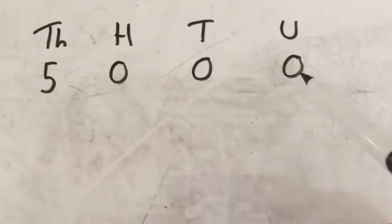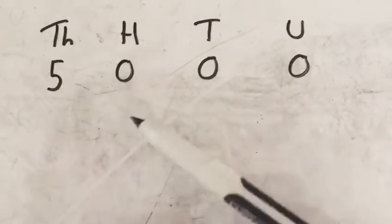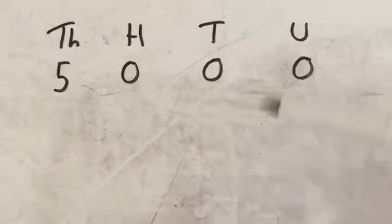So to start off, I'm just using the number 5,000. So I've got my 5 in my thousands, I've got my hundreds, tens and units with a placeholder.